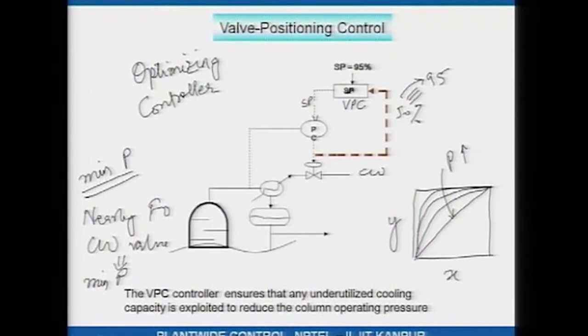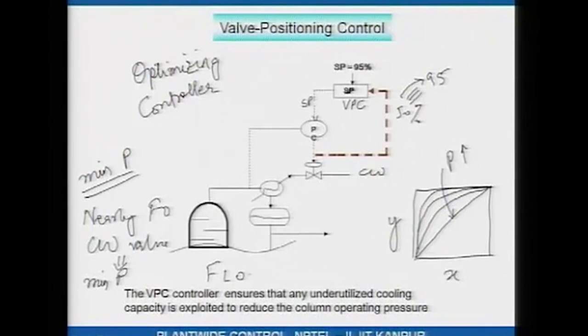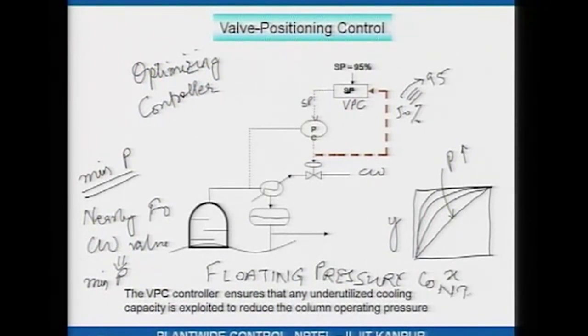What the valve positioning controller is essentially doing is saying: my cooling water valve is not fully open, which means I can reduce the pressure of the column. When I reduce the pressure set point, the pressure controller opens the cooling water valve, and slowly but surely the cooling water valve approaches nearly fully open, meaning the column is operating at as low a pressure as possible. This is also sometimes referred to as floating pressure control. Let me give another example of a valve positioning controller.